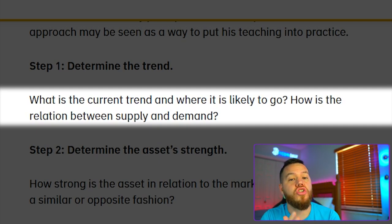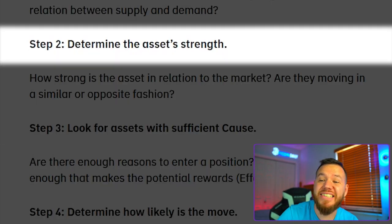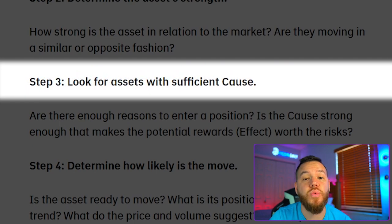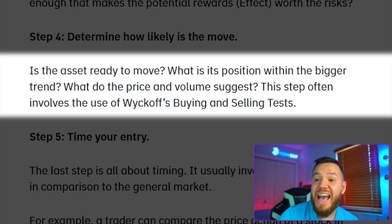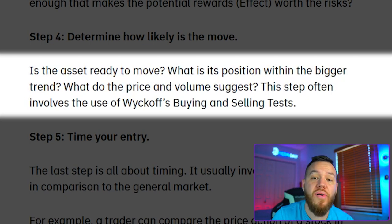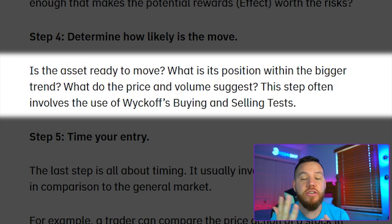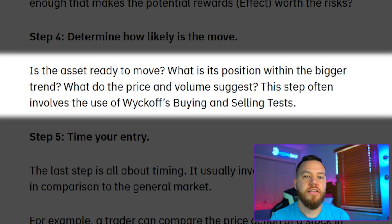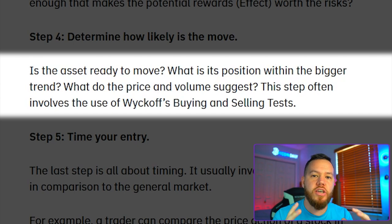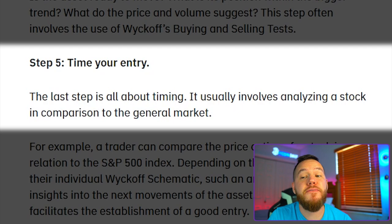When using any of these schematics, you should always consider Wyckoff's five-step approach. Step one: determine the trend — what's the current trend and where is it likely to go? Step two: determine the asset's strength. Step three: look for assets with sufficient cause — remember, cause and effect. Step four: determine how likely the move is — is the asset ready to move? What's the position within the bigger trend? What do price and volume suggest? What are the different patterns showing up in the chart? How does it look on different timeframes? This is where you build your story and put the pieces of the puzzle together. Step five: time your entry. Timing is probably the most difficult thing in trading, which is why I always advise people to try to dollar-cost average versus trying to find the perfect timing for your entry.